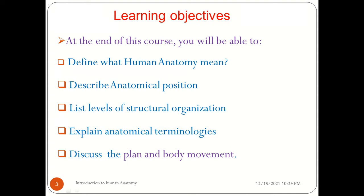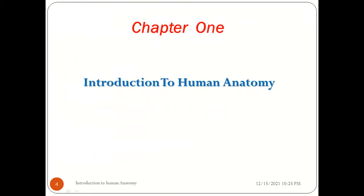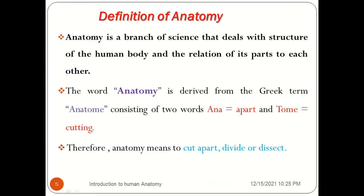Chapter 1 is about the introduction to human anatomy. The definition of human anatomy: anatomy is a branch of science that deals with the structure of the human body and the relation of its parts to each other — a branch of medical science concerned with the structure of the human body and how its parts relate to one another.